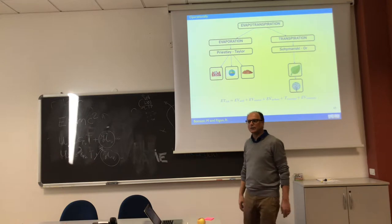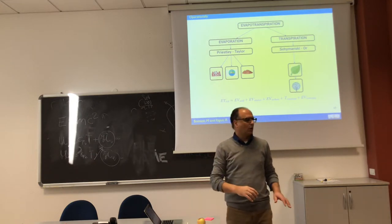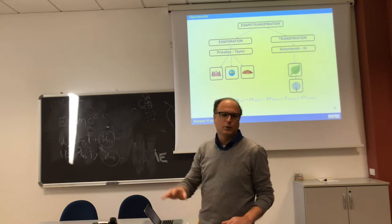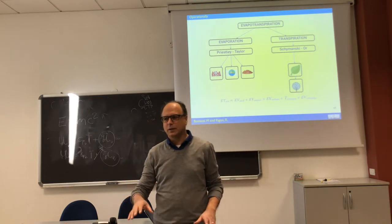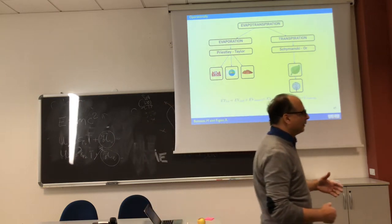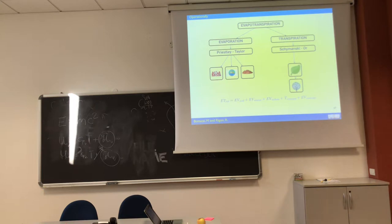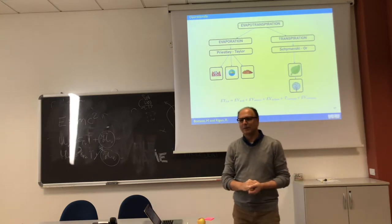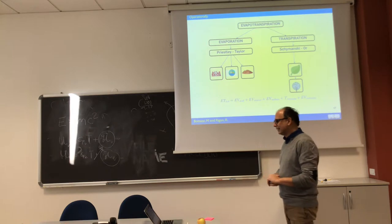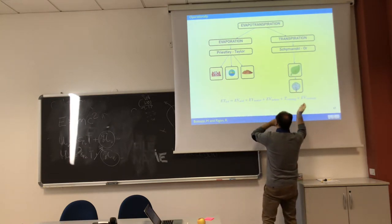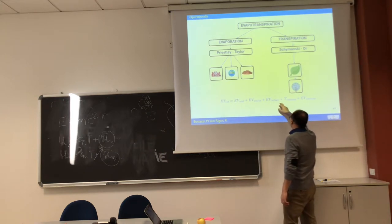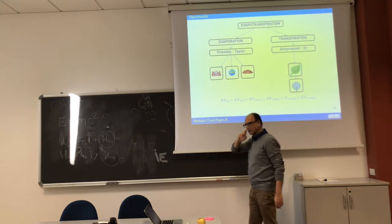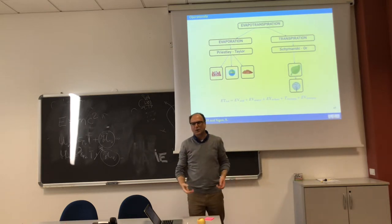Here we have the total evaporation, which is just the sum of the components. You can maybe derive the ratio between soil and vegetation using remote sensing. For instance, you say in this catchment, 40 percent is covered by forest, 30 percent is covered by meadow, and the rest is bare soil.